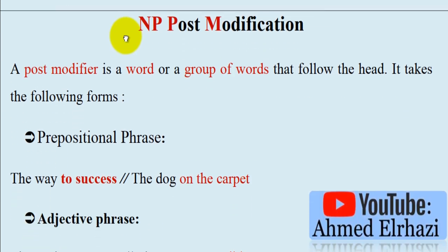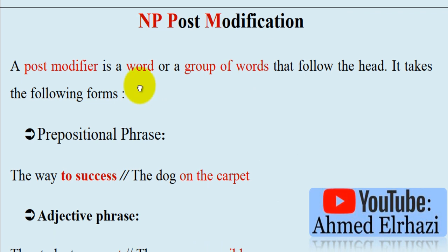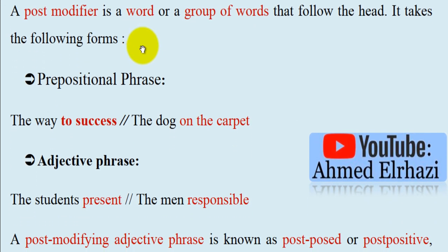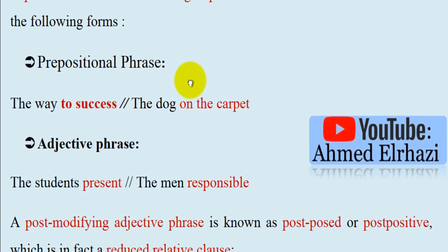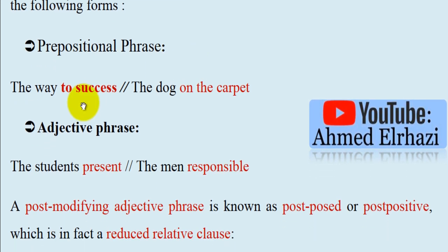Noun phrase post-modification. A post-modifier is a word or group of words that follows the head. It takes the following forms. The first form is a prepositional phrase, as in the example: the way to success — 'to success' is the prepositional phrase. Another example: the dog on the carpet — 'on the carpet' is the prepositional phrase.